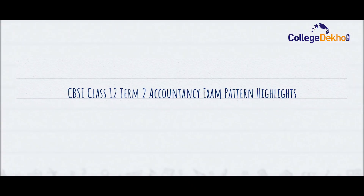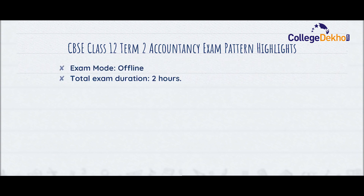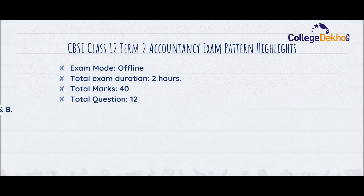First, let us look at some of the major highlights for CBSE Term 2 Accountancy exam pattern. The exam mode will be offline. The total duration of the exam will be 2 hours. The total marks for the paper will be 40, and there will be a total of 12 questions. The Accountancy paper will be divided into two parts: Part A and Part B.